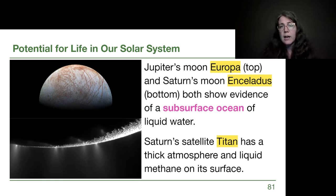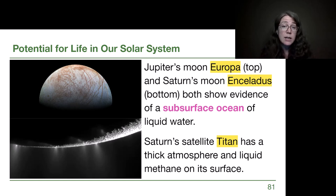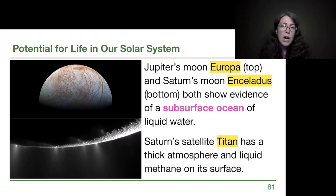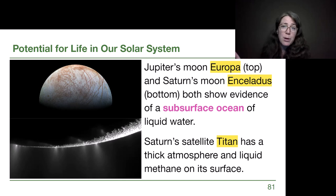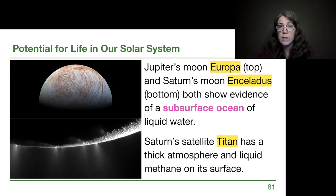Saturn's moon Titan was studied by the Cassini mission, which also sent a probe through Titan's atmosphere. Titan has a thick atmosphere — the only moon in the solar system with one — and has lakes and rivers of methane on its surface. Methane is liquid at colder temperatures, and while our earthling chemistry wouldn't simply work replacing water with methane, we can't rule out the possibility of a different tree of methane-based life forms on Titan. Bacteria were on Earth for billions of years before anything more complex happened, so it's possible our solar system already has microorganism life.